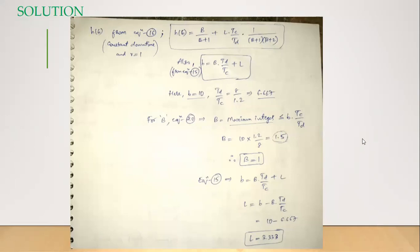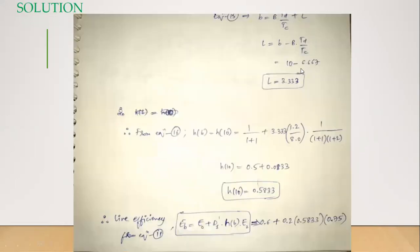The leftover unit L is calculated using equation 15: substitute small b and capital B into TD by TC to get L. Basically, if you subtract B from this term you get capital L — 10 minus 6.667 gives 3.333. So capital B and capital L are both known. We substitute to get h of 10, the h(b) for a storage capacity of 10, which equals 0.5833. Now we know all terms to get the line efficiency.